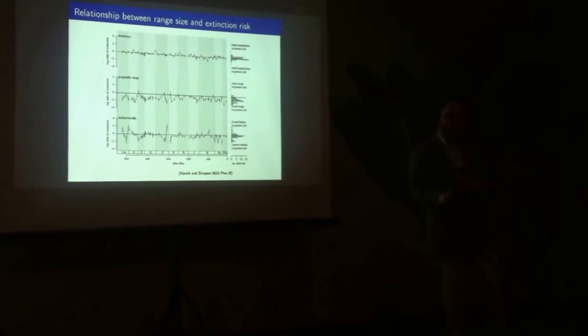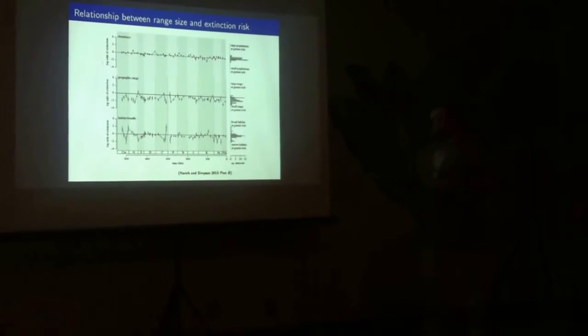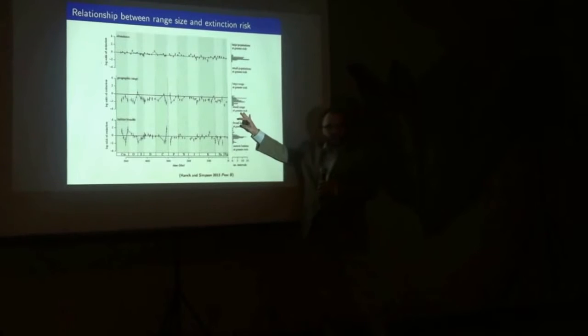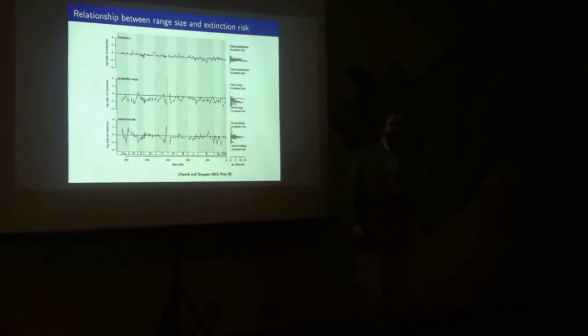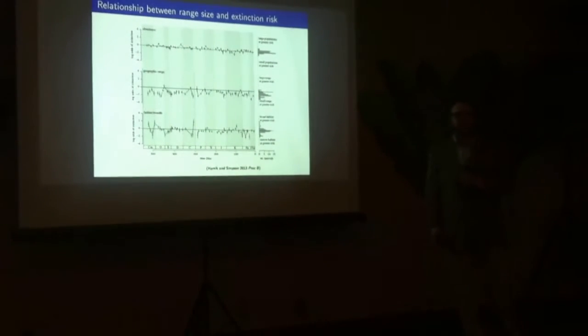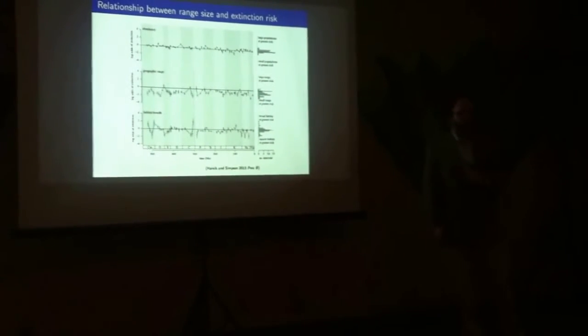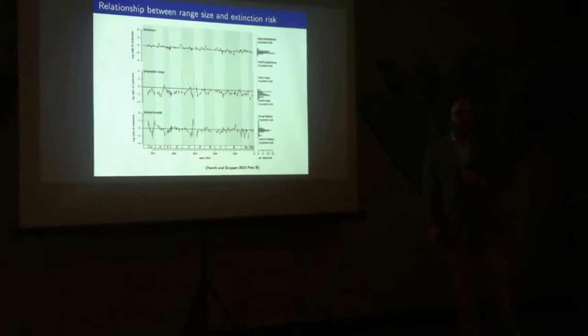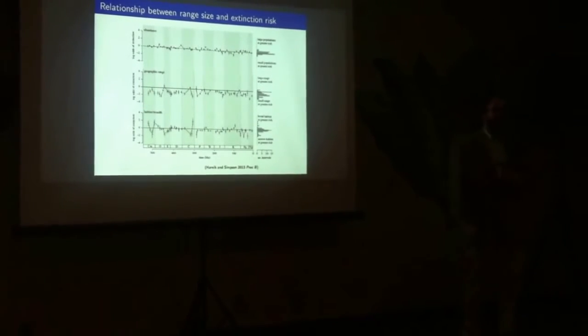One thing we do know, I would argue, is that if you have a larger geographic range, you have a lower extinction risk. And this you can base entirely on random processes. If you are present on the entire globe and other species are present on half the globe, and you destroy half the globe, you're more likely to survive. It's that simple. And so I would say we know that. It's one of the few things we know. Sometimes it doesn't hold.